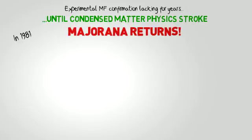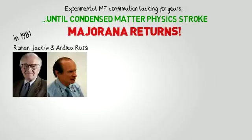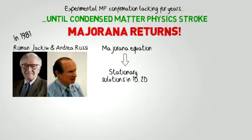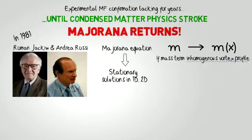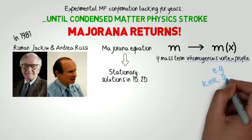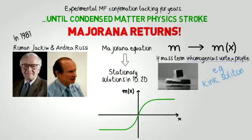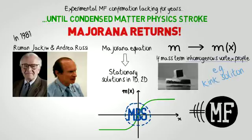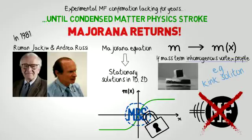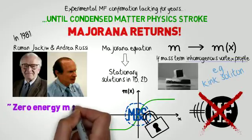In 1981, Jackiw and Rossi searched for solutions to the Majorana equations in systems of low dimensionality. In this case, solutions are not free but bound, if the mass term, instead of being a constant, as in Majorana equation, presents an inhomogeneous vortex profile. If this equation now describes the dynamics of an electron moving in a solid, then the mass term could correspond to a superconducting gap of that material. This is not a propagating solution moving through the solid, but it is bound to the point of zero gap. These solutions are known as zero energy modes, or Majorana bound states.